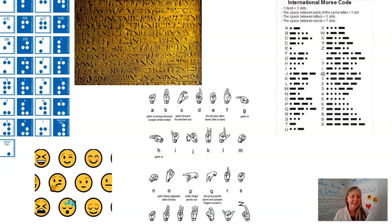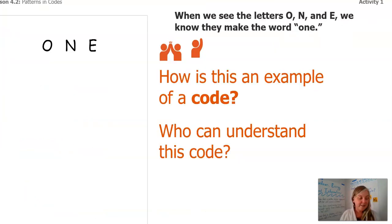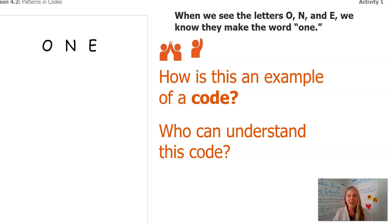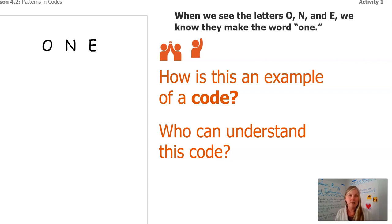But to those who understand the code, they're getting a whole different message than me just rubbing my hand over it. When we see the letters O-N-E, we know they make the word 'one.' How is this an example of a code though? Who can understand it? Is it because we're both working off of the English language? We both understand that when O-N-E is put together it says 'one'?